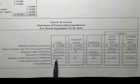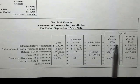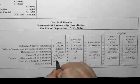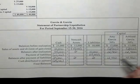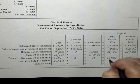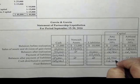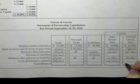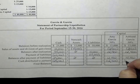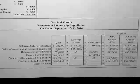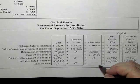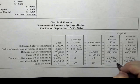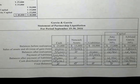Now we must distribute the $25,000 evenly between the two 50-50 partners. We're going to pay $25,000 out of cash, splitting it 50-50 with Amy Garcia and Ashland Garcia. Amy is going to get paid $12,500 and Ashland is going to get paid $12,500. This leaves us with zero cash, zero non-cash assets, zero liabilities, and each capital account has zero.